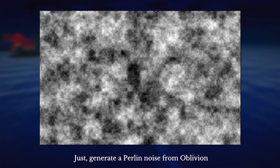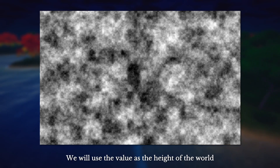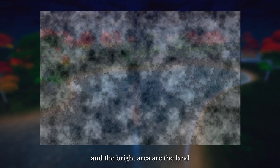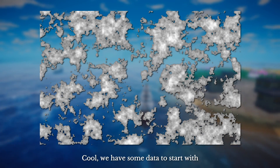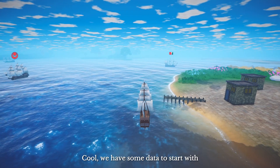Just generate a Perlin noise, then do a Gaussian blur to make it smooth. We will use the value as the height of the world. It means the dark parts will become the ocean, and the bright areas are the land. We now have some data to start with.